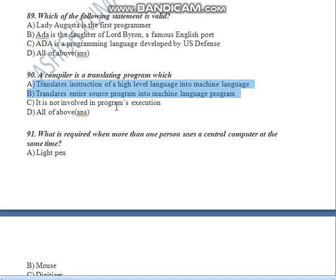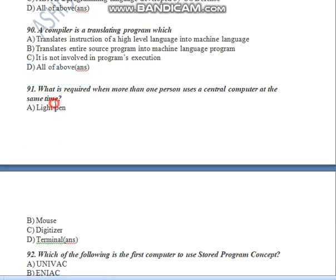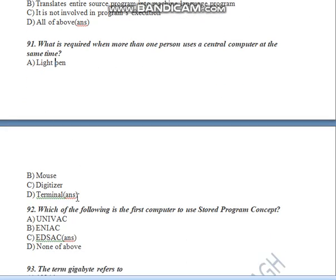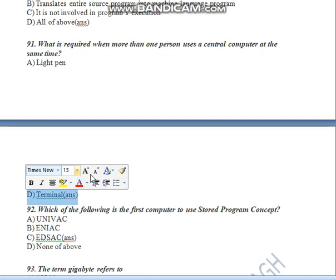Lady Augusta is considered the first programmer — she worked on translating programming to machine language. It is not involved in other programming. So the answer is D. Which is required when more than one person uses a central computer at the same time — so the answer is D.